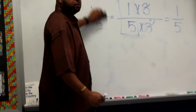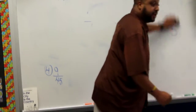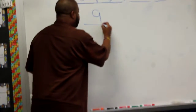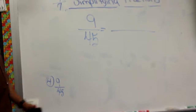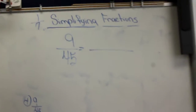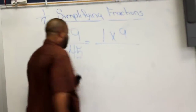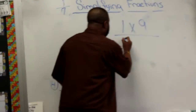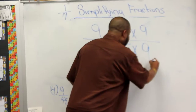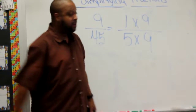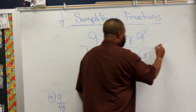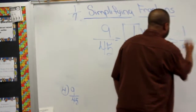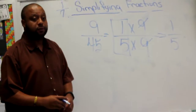Last one. Class? Yes. Is this easier for you? Yes sir. 9 over 45. Let's take a look at 9 and 45. Two factors for 9: 1 times 9. And for 45: 5 times 9. What cancels out? 9. The 9 cancels out. What is left? 1 over 5. So 9 over 45 simplified is 1 over 5. Is that easier for you? Yes sir. Very good.